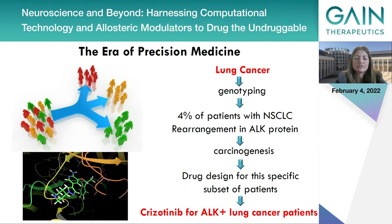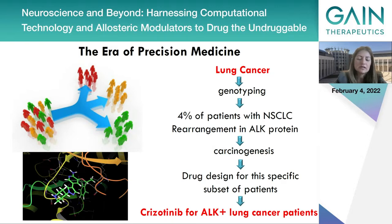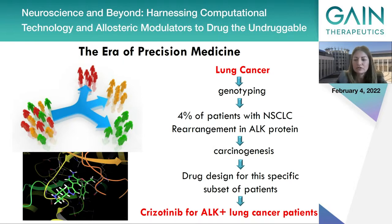This is the example of 4% of non-small cell lung cancer patients that have been genotyped, and it was found that they all bear a rearrangement in the anaplastic lymphoma kinase protein that leads to carcinogenesis. Drug discovery for this specific subset of patients led to a revolutionary drug at the time, crizotinib, that can be prescribed for anaplastic lymphoma kinase patients that have this rearrangement.